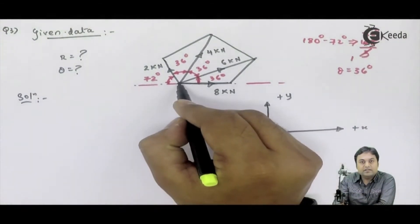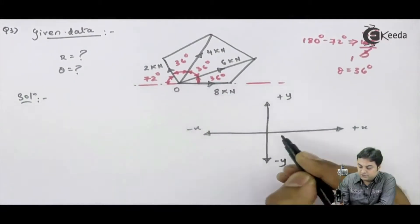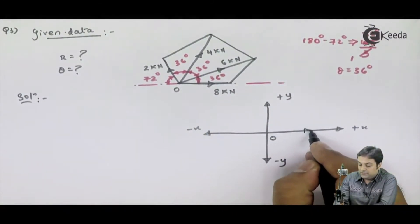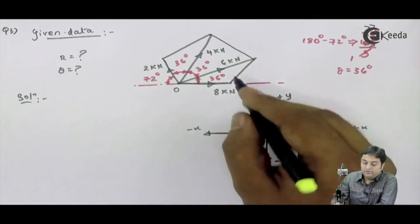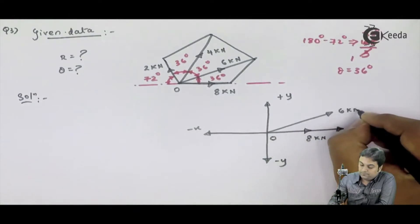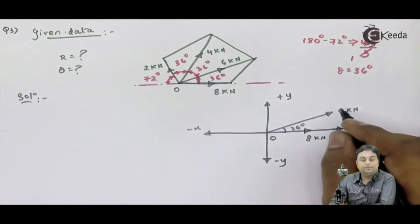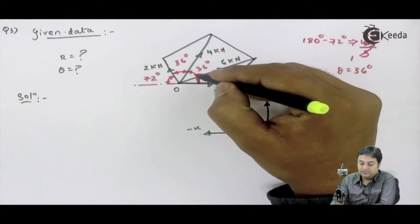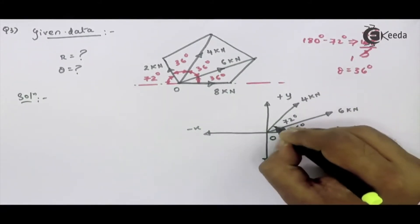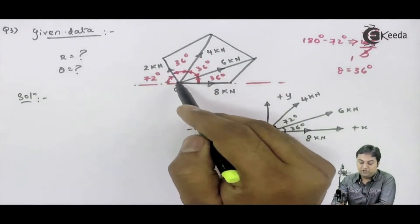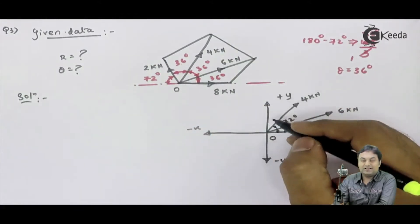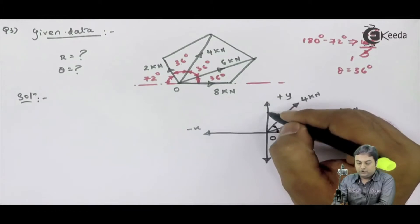Taking one corner of the pentagon as the origin: 8 kN acts in the horizontal direction; 6 kN is inclined at 36°; 4 kN is at 36° + 36° = 72°; and 2 kN — the total angle is 36° + 36° + 36° = 108°. So this 2 kN is inclined at 108° with horizontal.